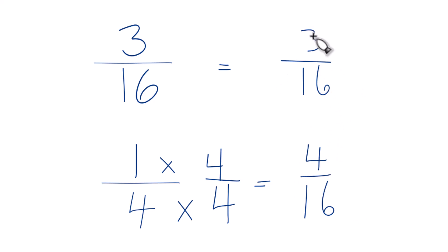And 4 is larger than 3, so 4 sixteenths, that's larger than 3 sixteenths. And therefore, 1 fourth, that is larger than 3 sixteenths. So that's how you tell which one of those fractions is larger.